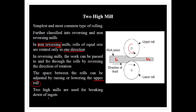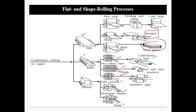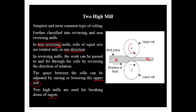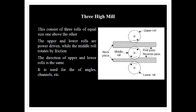The main use of 2-high rolling is to break down the ingot. For 3-high rolling, it is also used to break down the ingot. When we continue through each pass, we can continue the total rolling operation. The passes are called bottom rolling and top rolling.